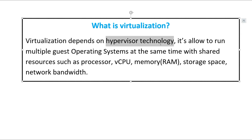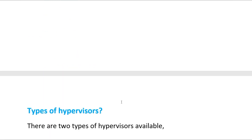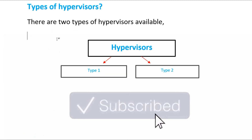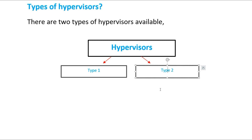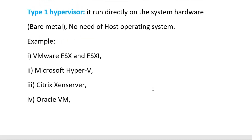Now let's talk about the hypervisor. There are two types of hypervisors available: Type 1 and Type 2. Type 1 hypervisor is a virtualization hypervisor.